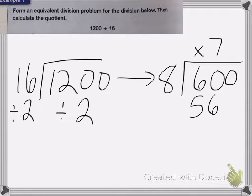That's 56. We subtract, we have 4 left over, bring down my 0. 8 goes into 40 five times, so my answer is 75.